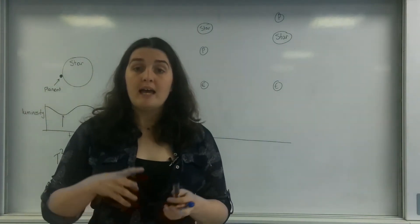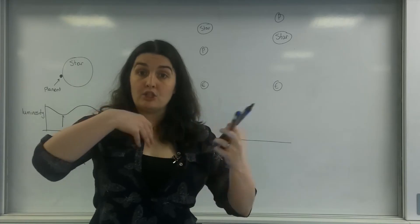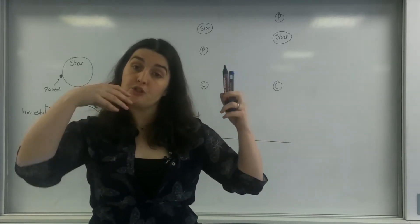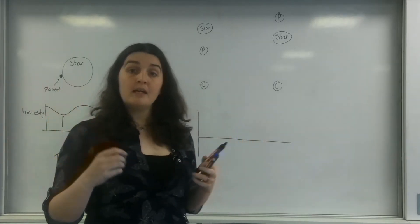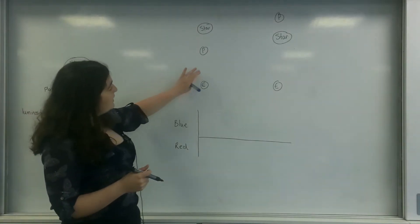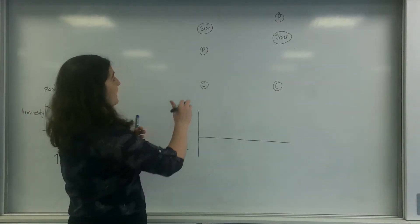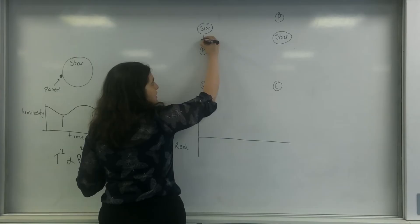As we know with gravitational pull, planets exert a force on the star as much as the star exerts force on the planet. So what actually happens is when it's in this orientation, the star here is actually pulled slightly towards us.